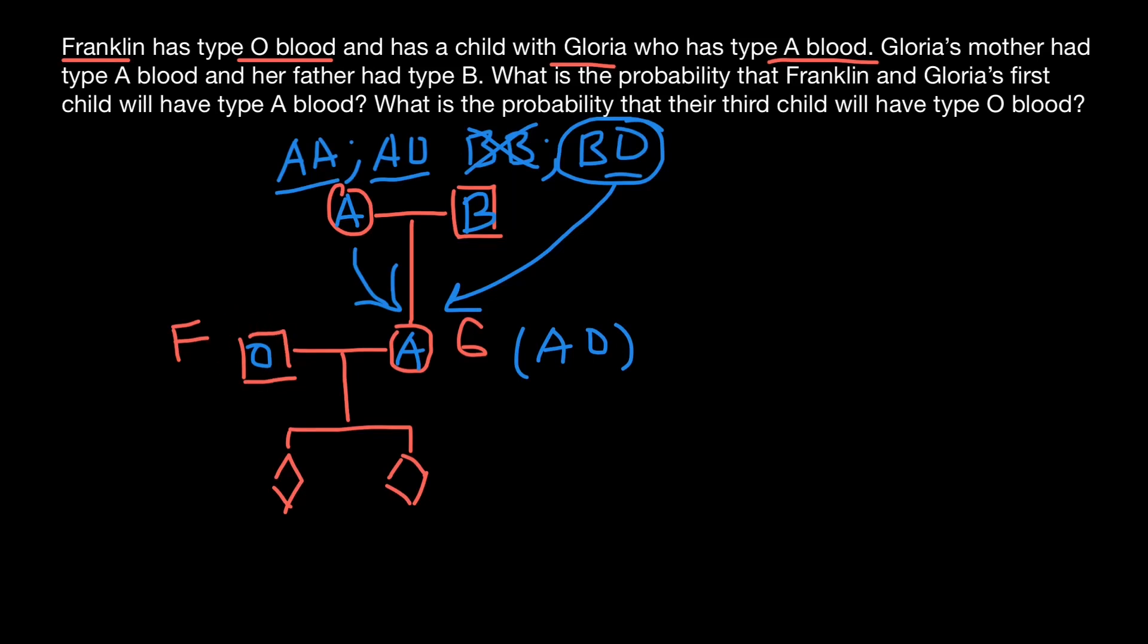And as for Franklin, because he belonged to the blood group O, the only genotype that makes this blood group would be genotype OO. So now we know both genotypes of Gloria and Franklin, and we can predict genotypes and phenotypes of their children.